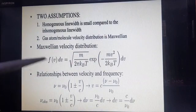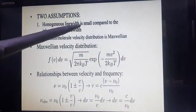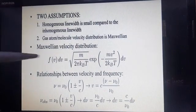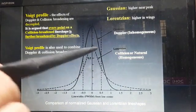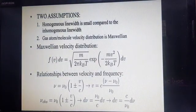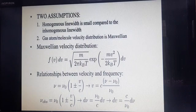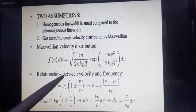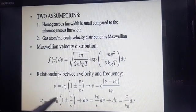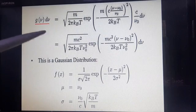There are two assumptions for Doppler broadening. First, the homogeneous line width is small compared to the inhomogeneous line width, meaning the FWHM is small compared to the inhomogeneous width. Second, the gas atoms' or molecules' velocity distribution is Maxwellian, so we can apply the Maxwell distribution formula for studying these molecules. The Maxwell velocity formula relates velocity and frequency.